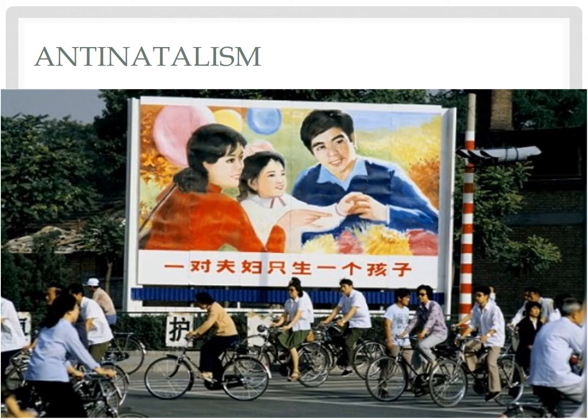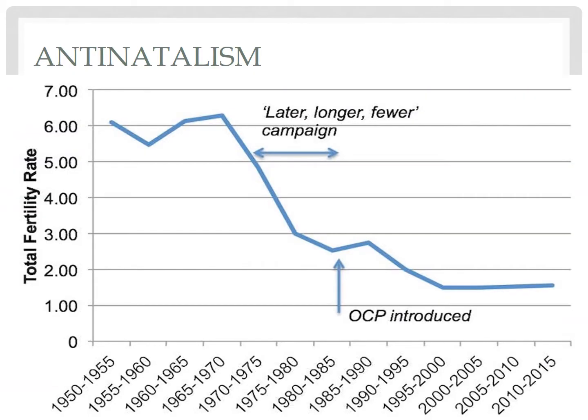But by 1980, the government in China implemented arguably the strictest antinatalist policy ever implemented. The government provided free contraceptives and prenatal care, paid maternity leave, and cash rewards for following the policy. Those who didn't, however, faced fines, were unable to get housing or schooling, and if the parents held a government position, faced the possibility of demotion if they didn't adhere. But it worked at reducing the fertility rate.